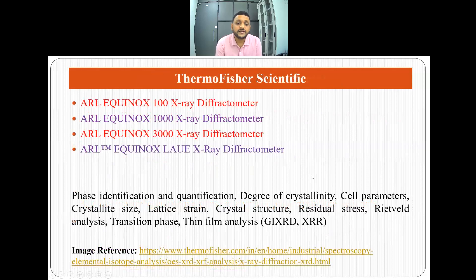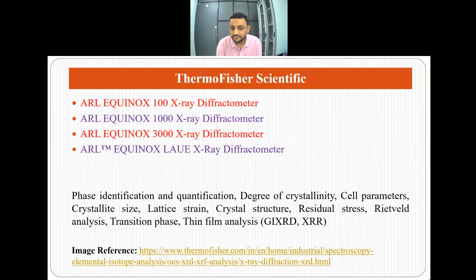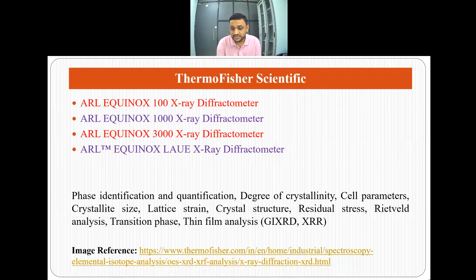The third manufacturer is Thermo Fisher Scientific. Their diffractometers include the ARL Equinox 100, ARL Equinox 1000, ARL Equinox 3000, and ARL Equinox low X-ray diffractometers. These can be used for phase identification and quantification, degree of crystallinity, cell parameters, crystallite size, lattice strain, crystal structure, residual stress, Rietveld analysis, transition phase analysis, and thin film analysis.